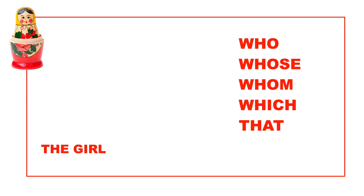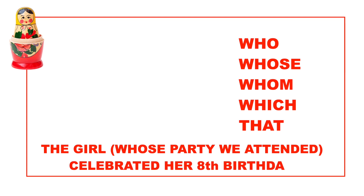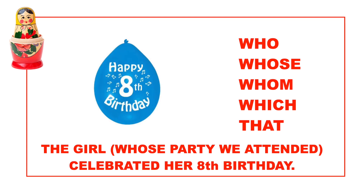Notice who acted as both starter word and subject of the adjective clause. The girl, whose party we attended, celebrated her eighth birthday. The girl celebrated her eighth birthday is a sentence. Which girl? The girl whose party we attended.